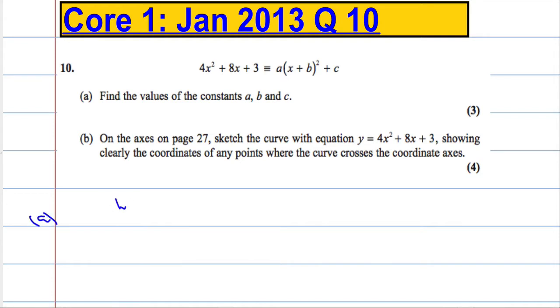I'm going to write the expression down first. We get 4x squared plus 8x plus 3. And what I'm going to do is I want the coefficient of x squared to be 1, so I'm going to factor out the 4. And that leaves me with x squared plus 2x, and we have the 3.